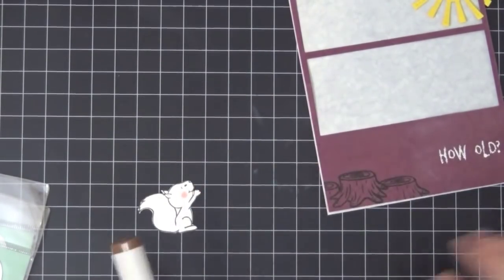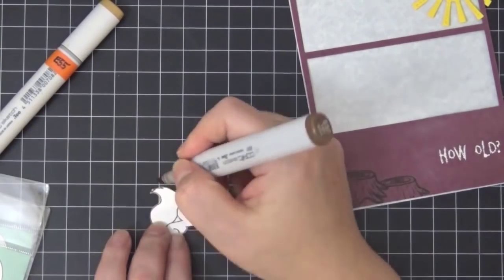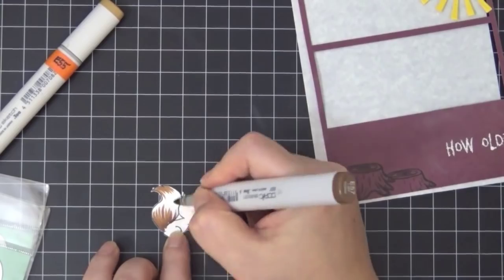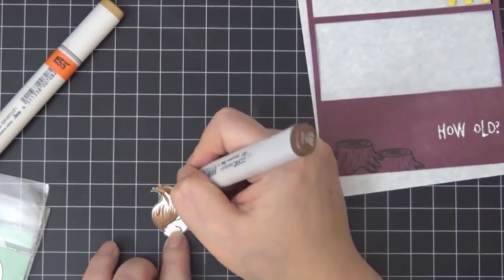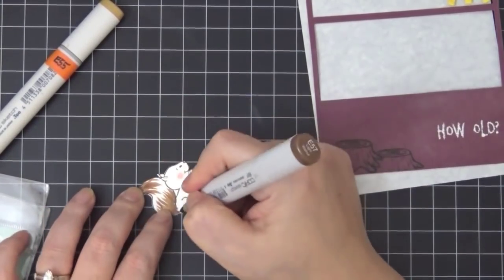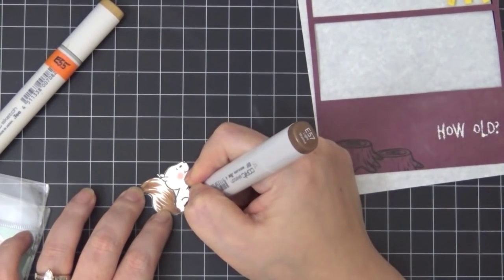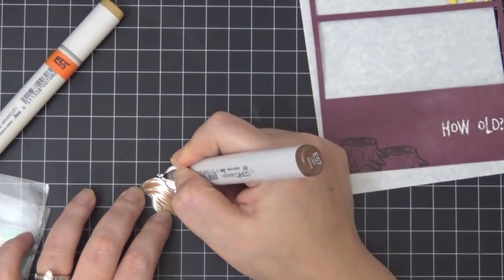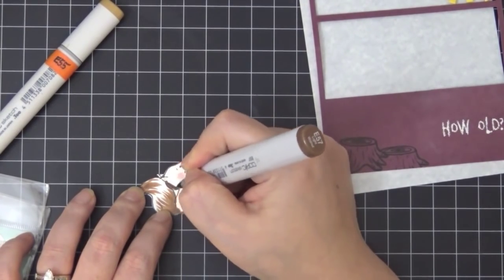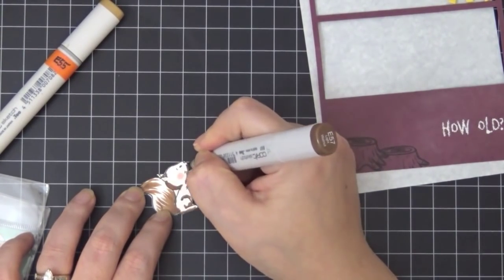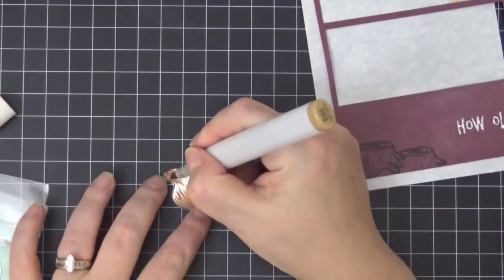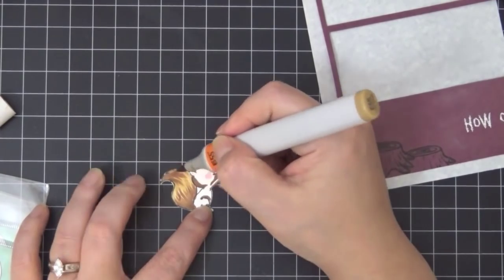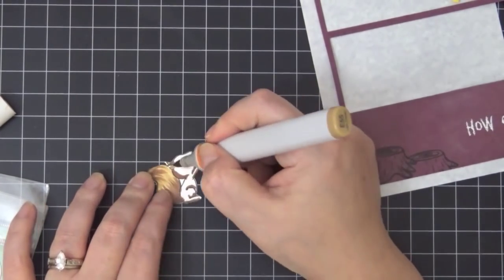I'm going to go ahead and quickly color my squirrel using some Copic markers. Now I'm using E57 and E55 and an R20 for the cheeks. I'm doing a really fast coloring. It's a small image. And I like to start out with my darkest and then use my medium and then a light. But in this case I'm only using two colors, so the dark and the light.